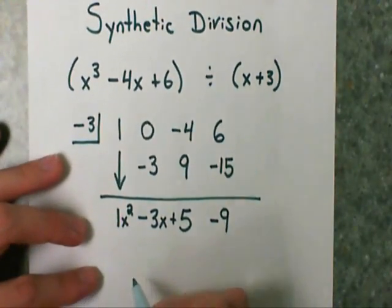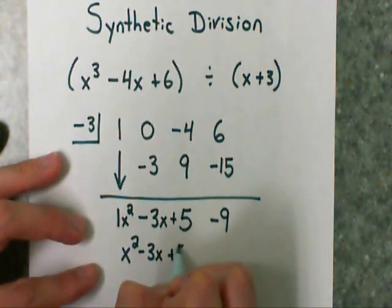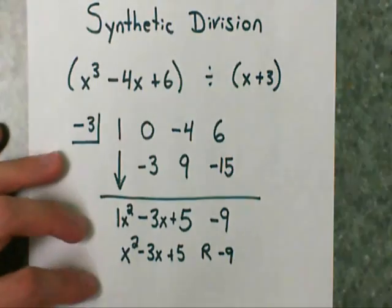So to write my answer, I can say x squared minus 3x plus 5 with a remainder of negative 9. However,